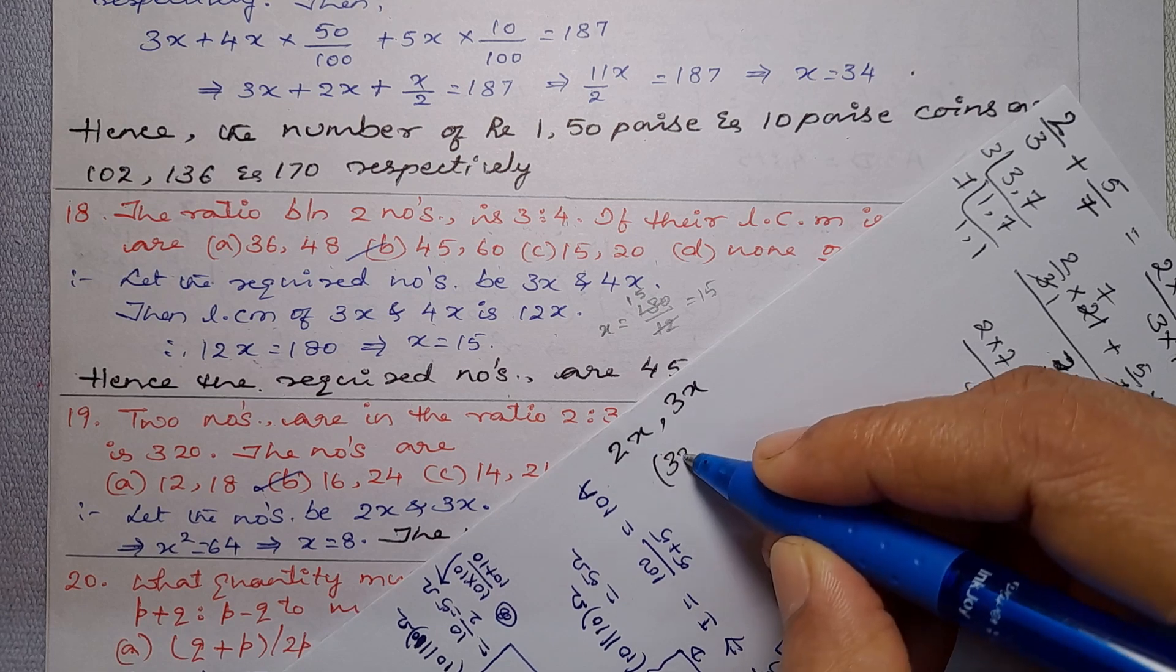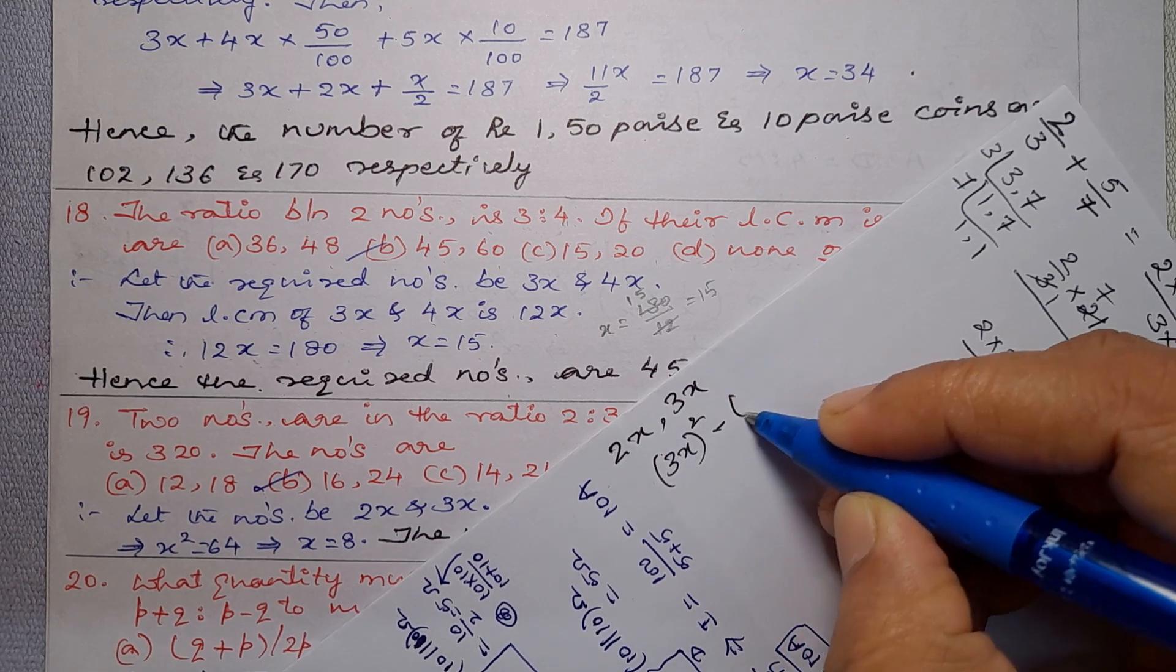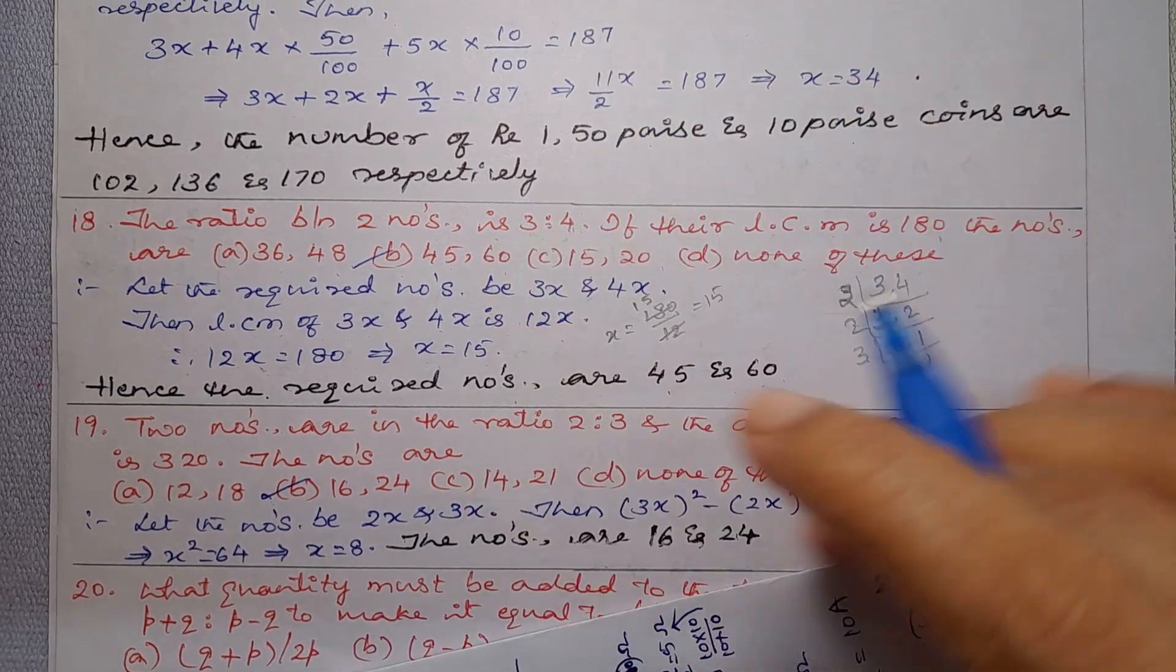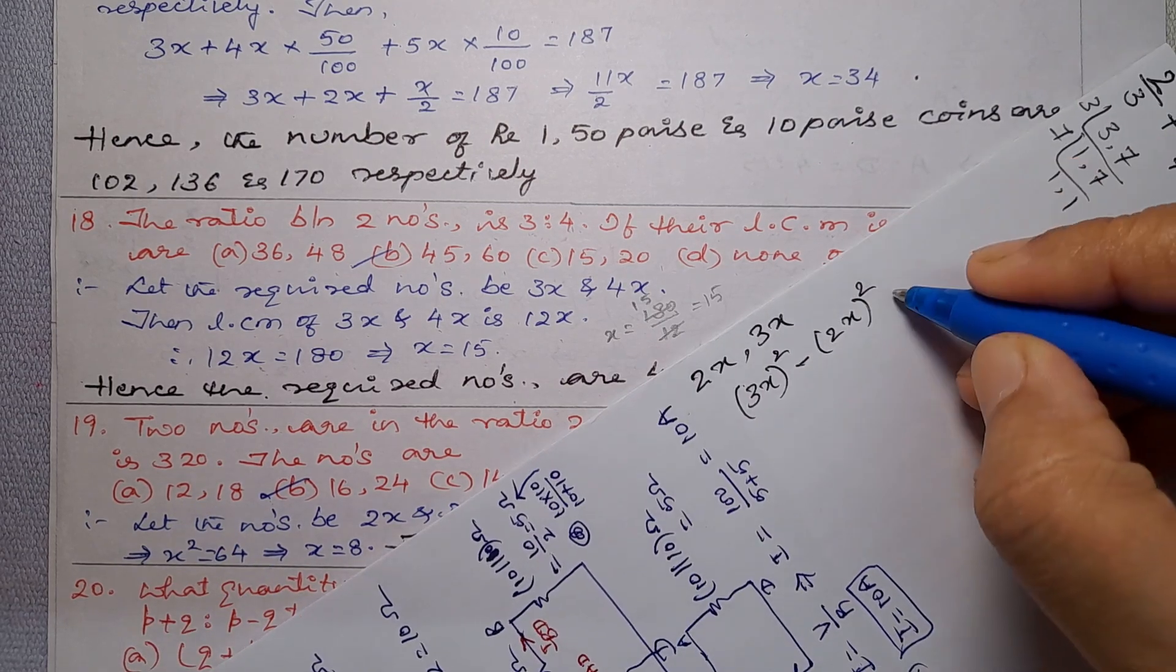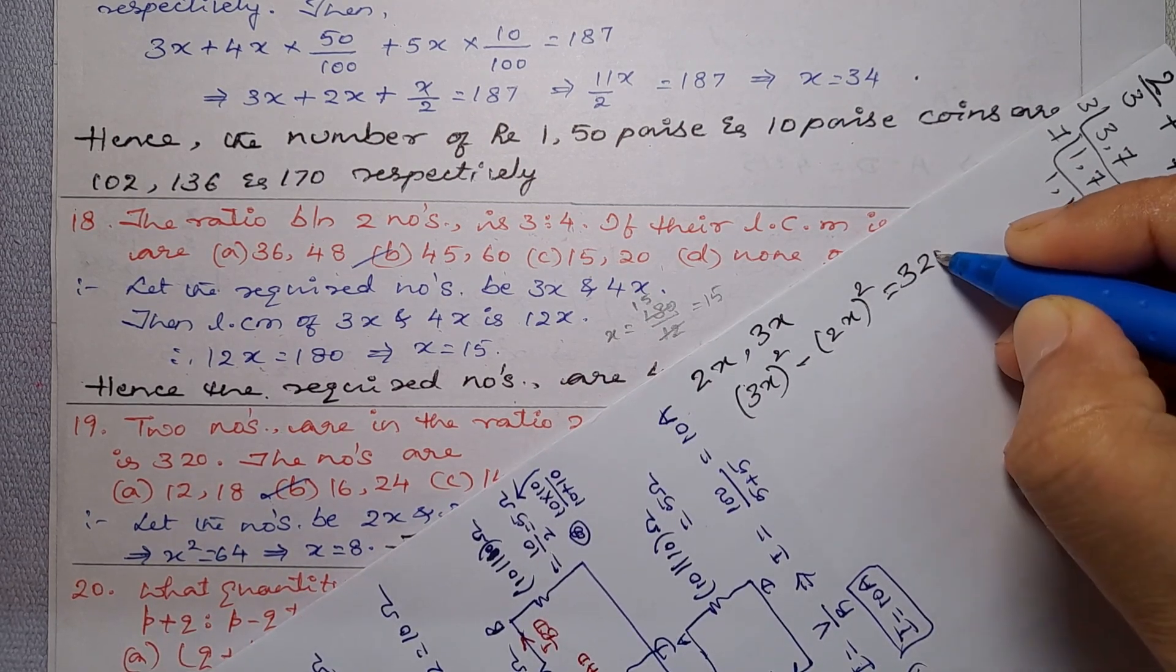So we have 3x whole square minus 2x whole square. The difference is 320, as given in the problem, so equal to 320.